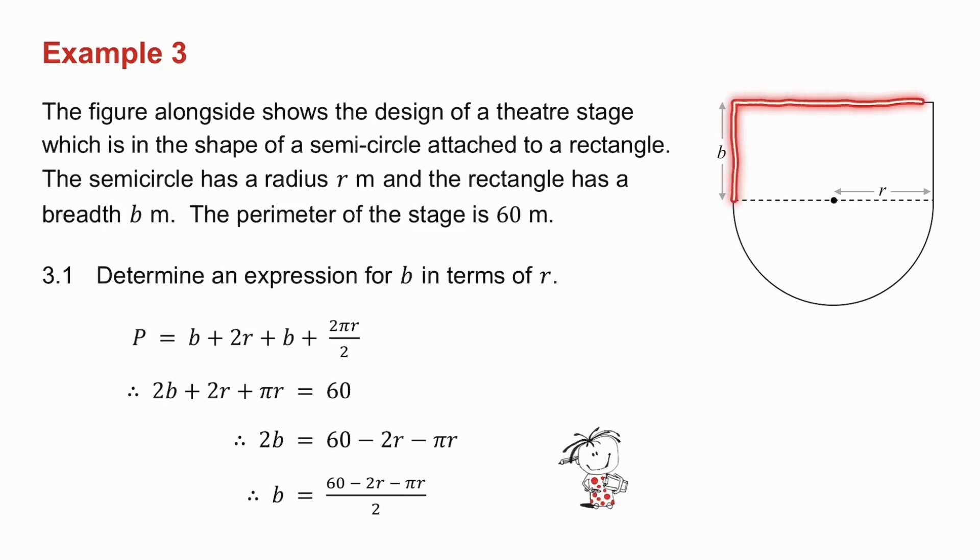...and then I have a semicircle. The formula for the circumference of a circle is 2πr, so the formula for the circumference of a semicircle is 2πr divided by 2. So there I've got an expression for the perimeter of the stage. I know that this must be equal to 60.